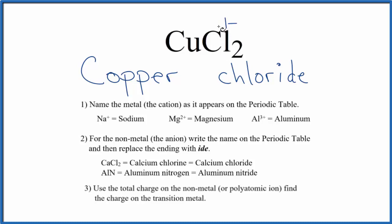So 2 times 1 minus, that's 2 minus. The copper, that's going to have to be 2 plus to balance the charge, give us a net charge of 0. So since we have the 2 plus here, we need to write that in the name as a Roman numeral 2 with parentheses around it. And that makes the name for CuCl2, copper 2 chloride.